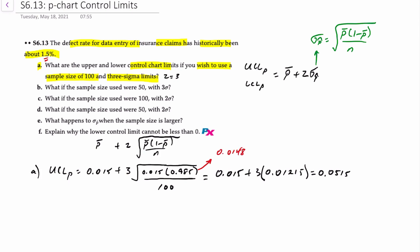If we work down to the lower control limit, that's 0.015 minus 3 times 0.01215, and that will give you a lower control limit of negative 0.0215. But you can't have a negative lower control limit, so that means 0.